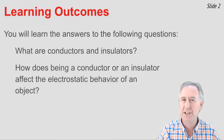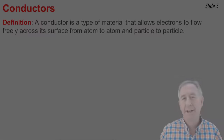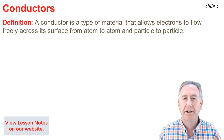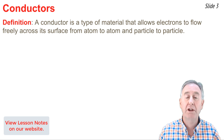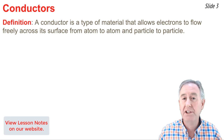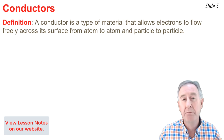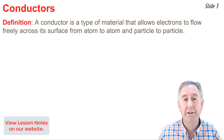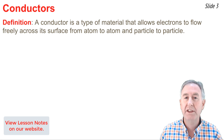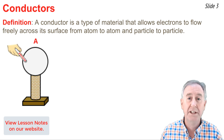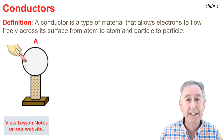I'm Mr. H. Let's get started. A conductor is a type of material that allows electrons to flow freely across its surface from atom to atom and particle to particle. To illustrate this idea, let's consider a neutral conducting sphere that is touched by a negatively charged object.